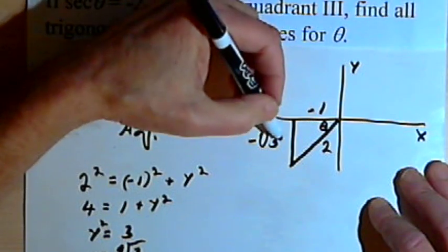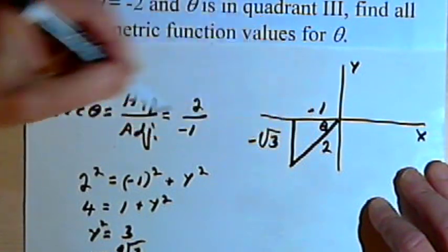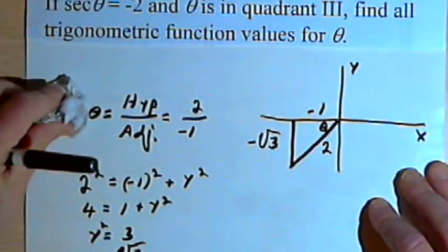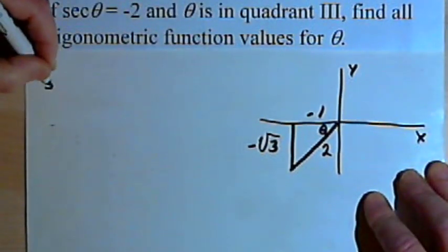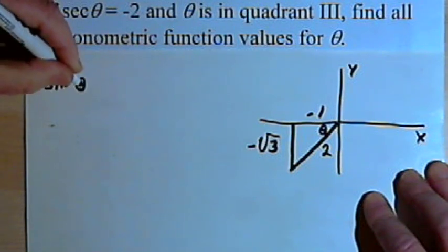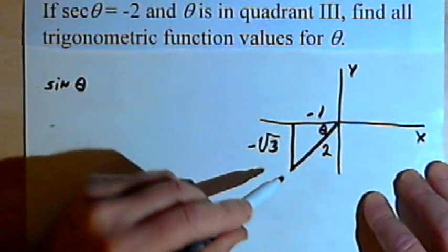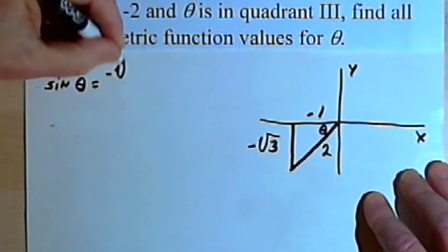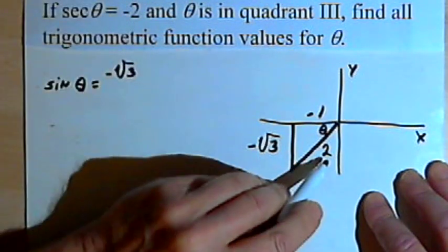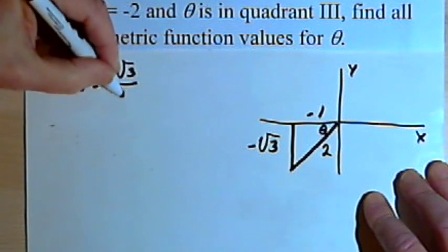Well, now I've got two sides and a hypotenuse for a triangle, so I can fill in all of my trigonometric function values. The sine for angle theta is going to be the opposite side, negative square root of 3, over the hypotenuse, which is 2.